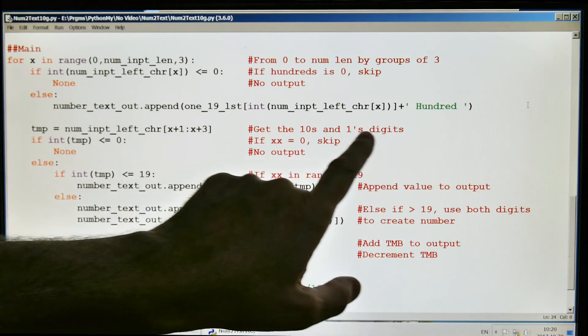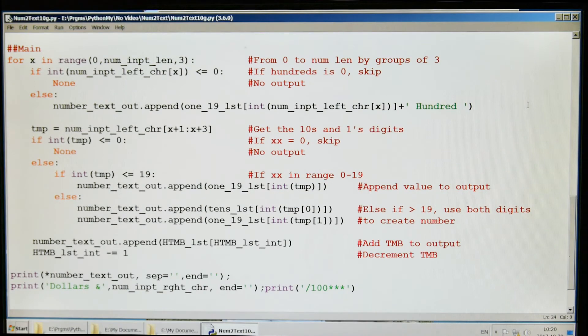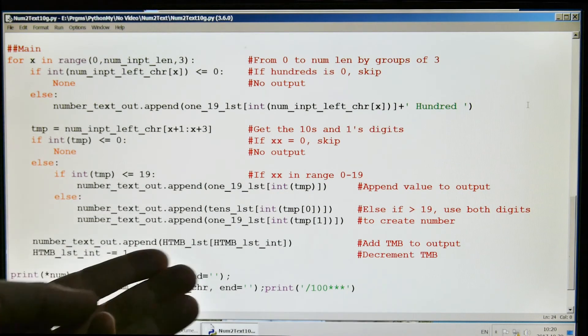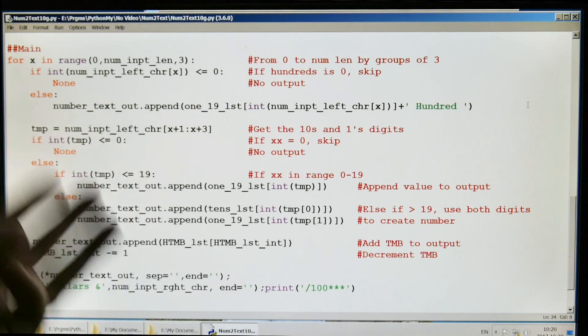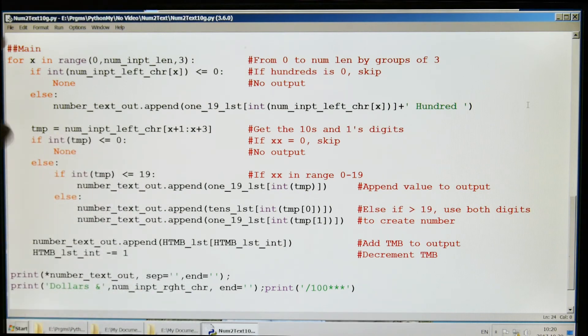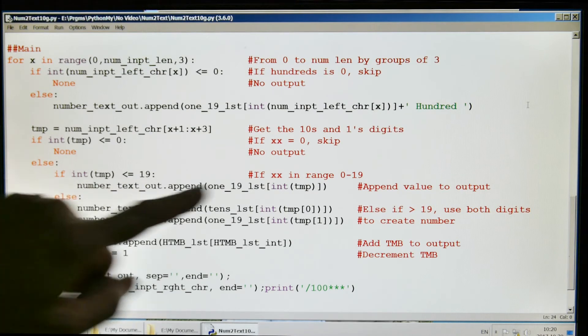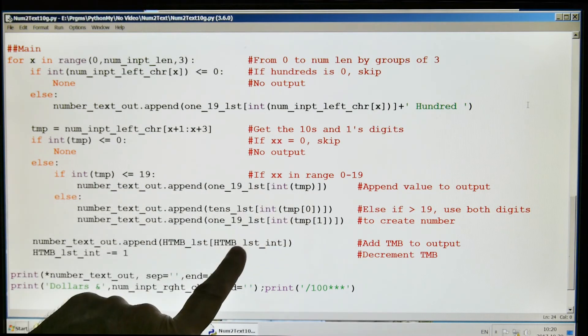Here we get the tens and ones digits. So this loop works whether it's 123 or 123 million or 123 billion—that's what this part is doing, those three digits and looking at the last part of it.